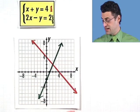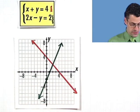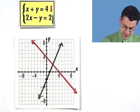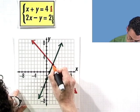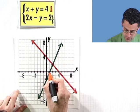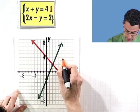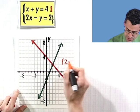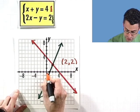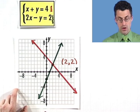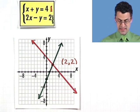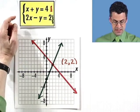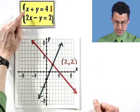Is there a solution? That's asking the exact same thing as: do these lines intersect? Well, it looks like they intersect right here at the point (2, 2) — 2 over, 2 up. We can verify that by plugging back in and checking. So let's let x be 2 and y be 2 and see if we're satisfied.